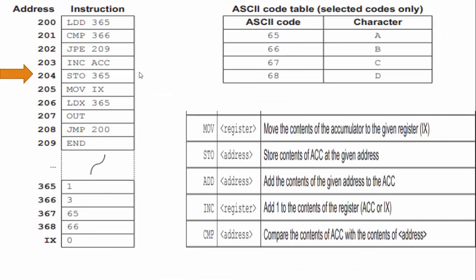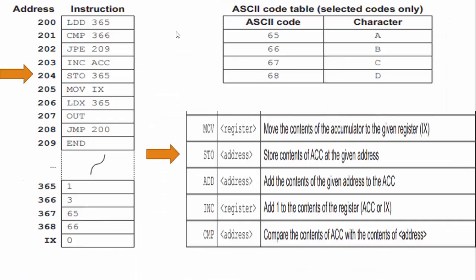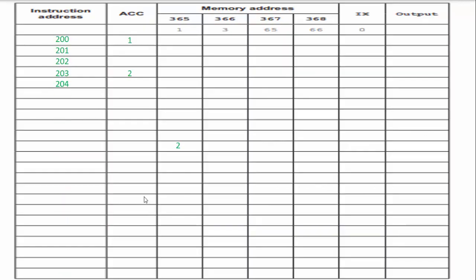I move to the next one, STO. Store the contents of the accumulator at the given address. This is where it can get tricky — if you're always looking at the original values and not the updated ones, you can make a mistake. So we're going to store it at 365. On my paper I would cross out the one and update it to two. I document that on my trace table: instruction 204 and address 365 is now the value of two.